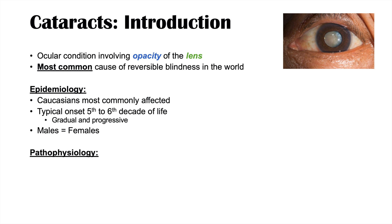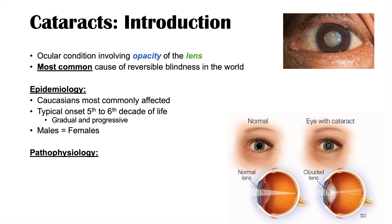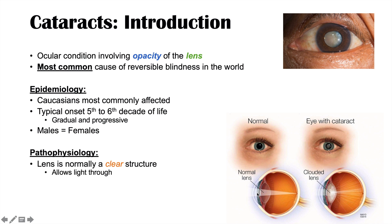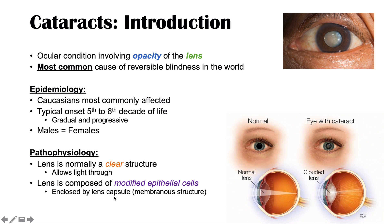So what is the pathophysiology of cataracts? It all has to do with the lens in the eye. The eye is very complex, so this is a cursory overview of eye anatomy. Here is a normal lens — it is normally a clear structure, allowing light to travel through it to reach the retina at the back of the eye, allowing us to see images. The lens itself is composed of modified epithelial cells and is enclosed by a lens capsule, which is a membranous structure.